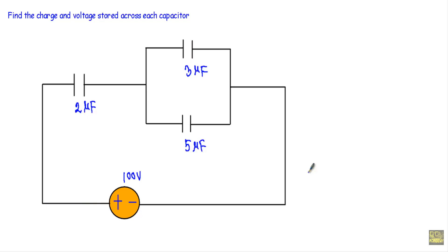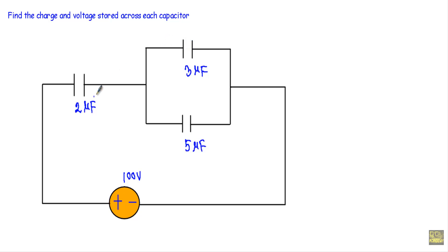In this video I will show you a circuit example in which we will have several capacitors connected in series and parallel. We have a 2 microfarad connected in series with the parallel connection of 3 microfarad and 5 microfarad. We are supplying the circuit with a 100 volt source, and we have to calculate the charge and the voltage stored across each capacitor.